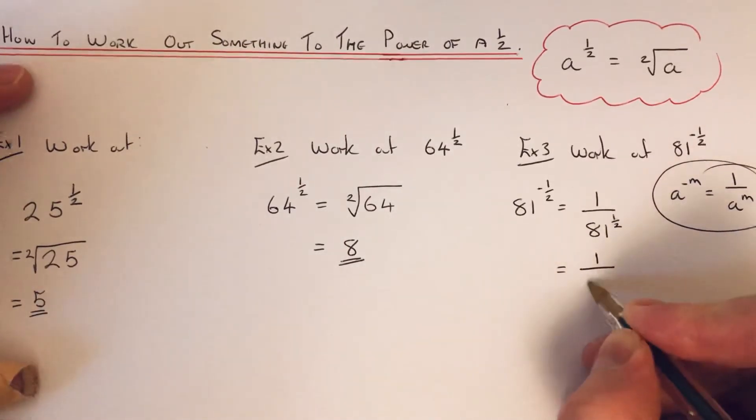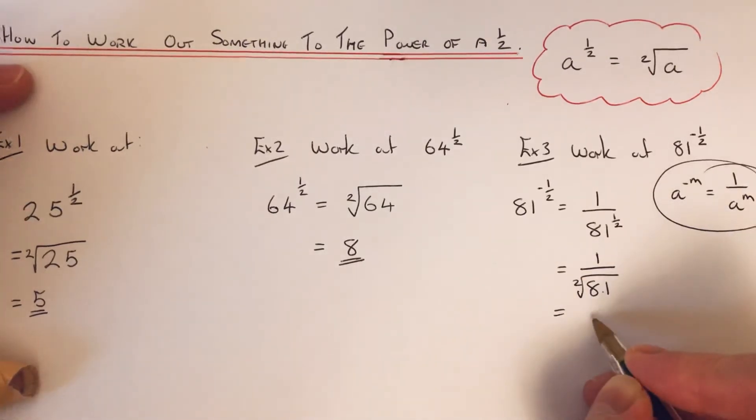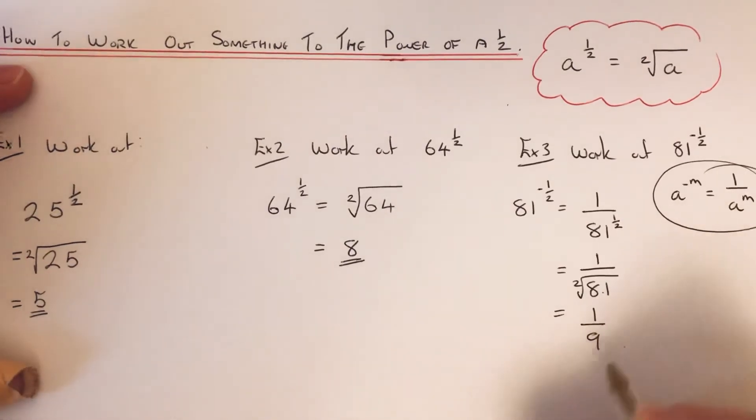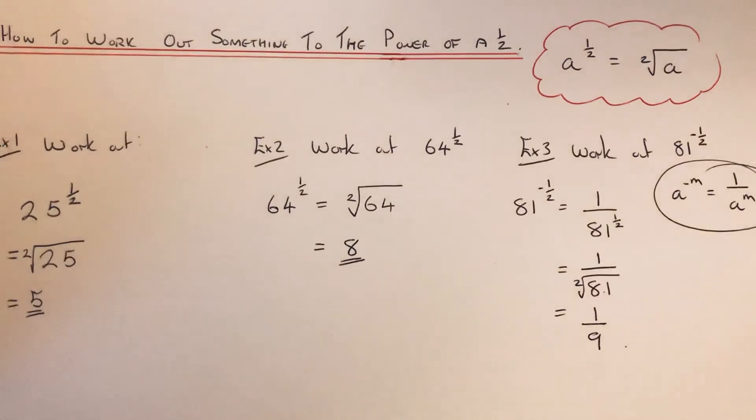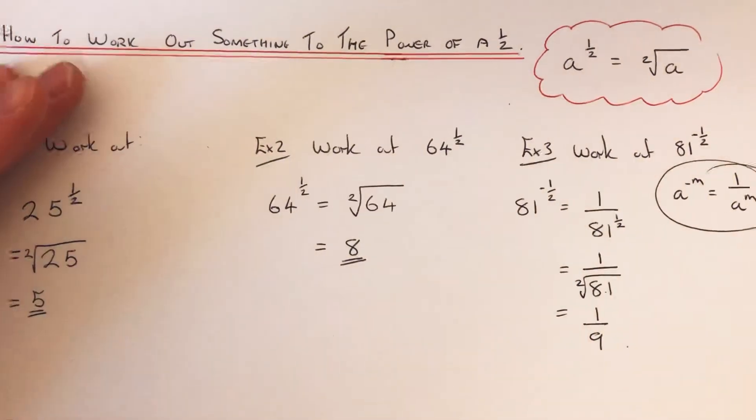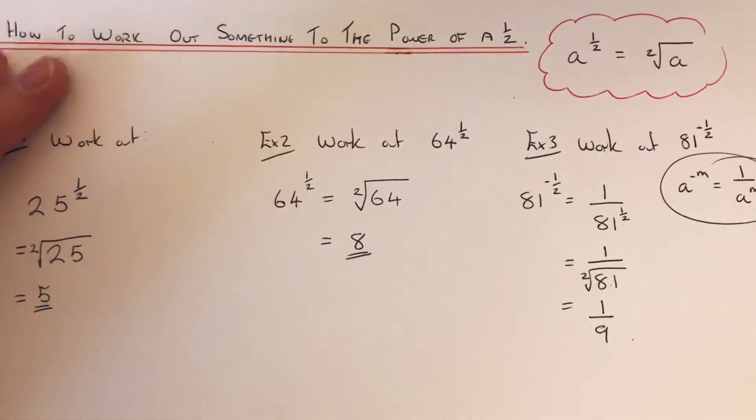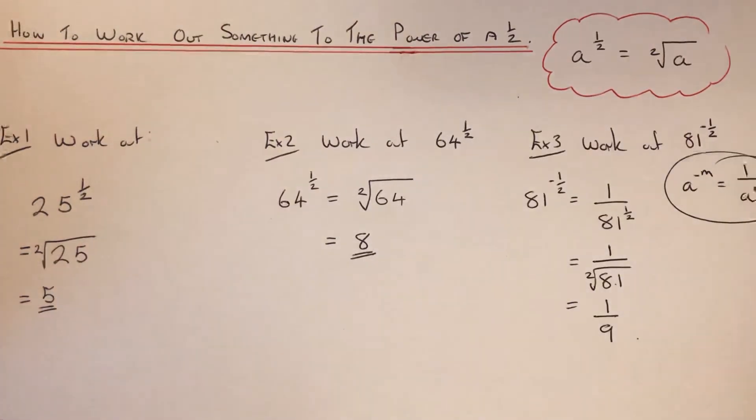So the square root of 81 is 9 because 9 times 9 is 81, so you're left with the final answer of one ninth. So I hope you liked this video. If you did, make sure you like and subscribe. Thanks for watching, bye bye.